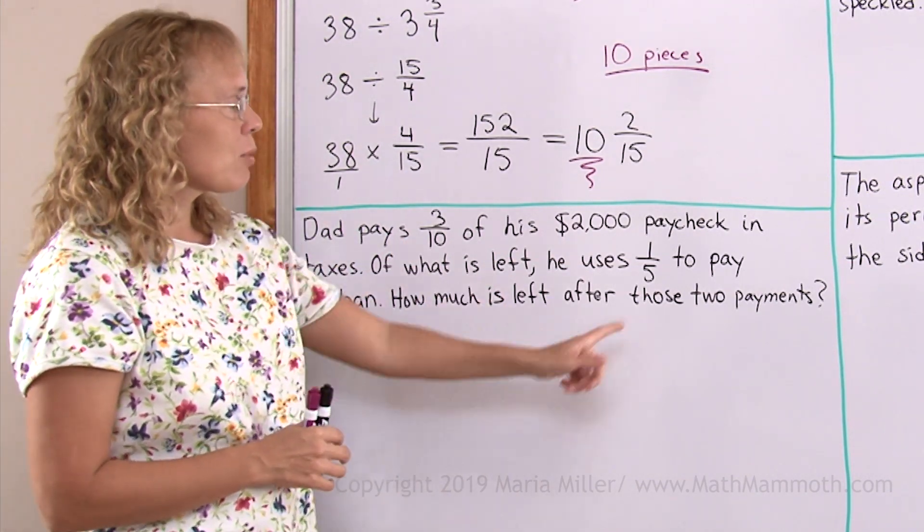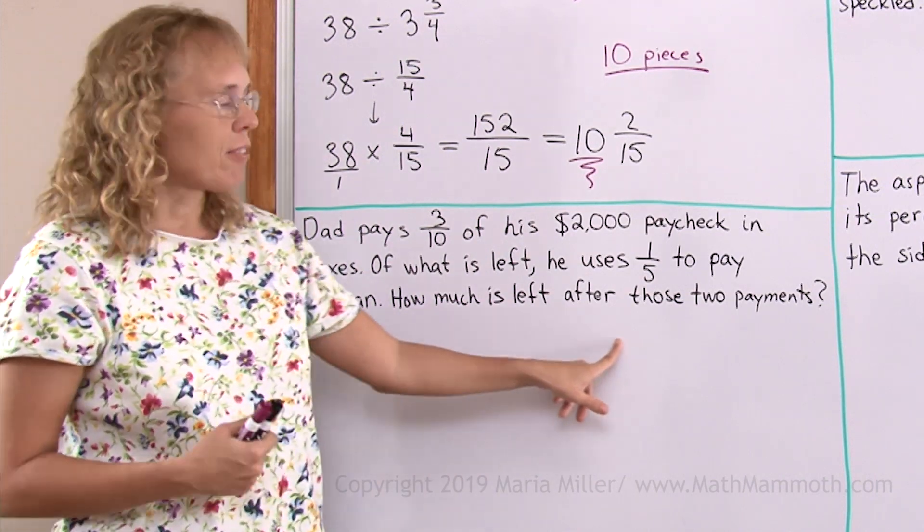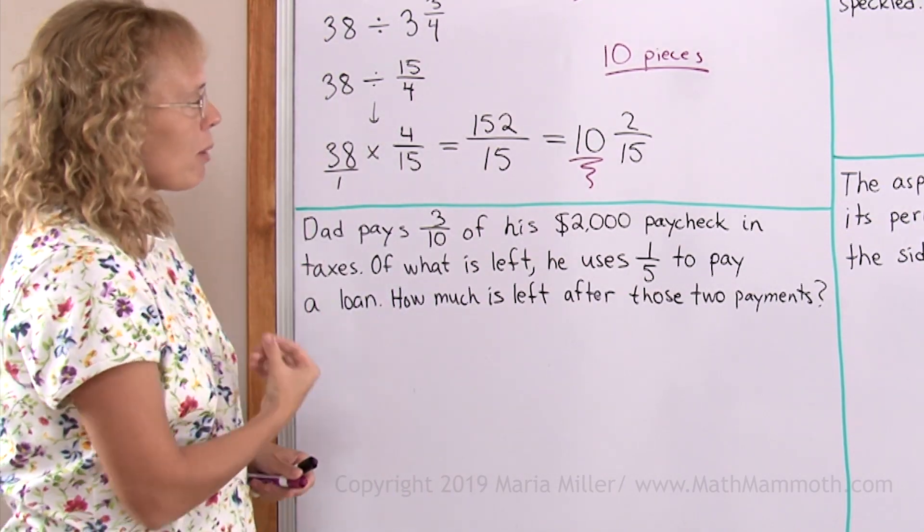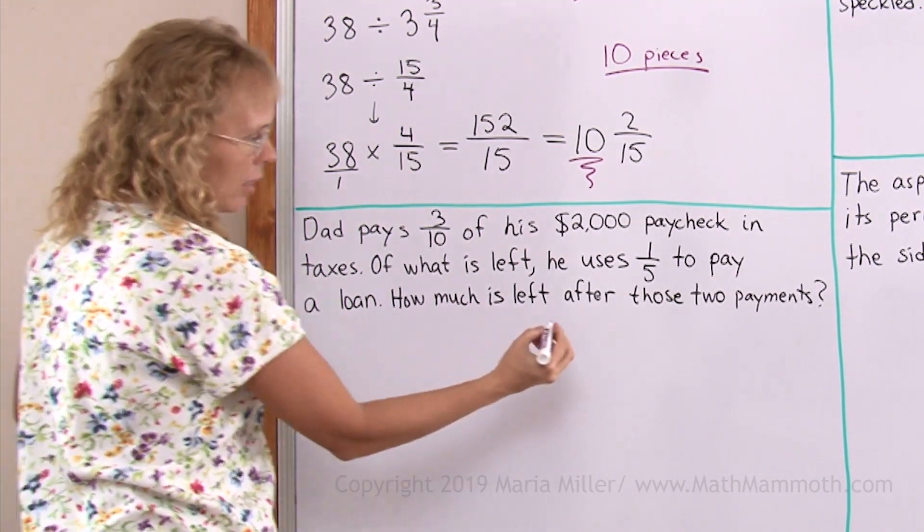Of what is left, he uses one-fifth to pay a loan payment. How much is left after those two payments, after paying the taxes and after paying the loan payment? This problem I want to show you using the bar diagram once again.